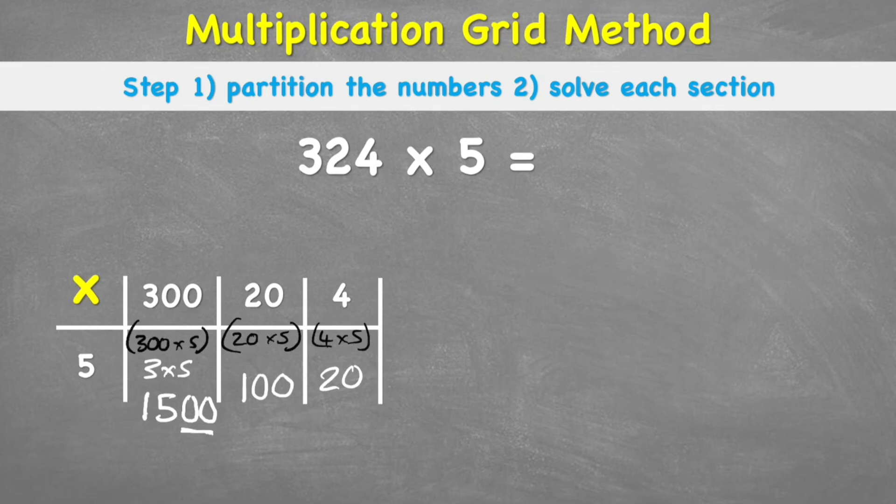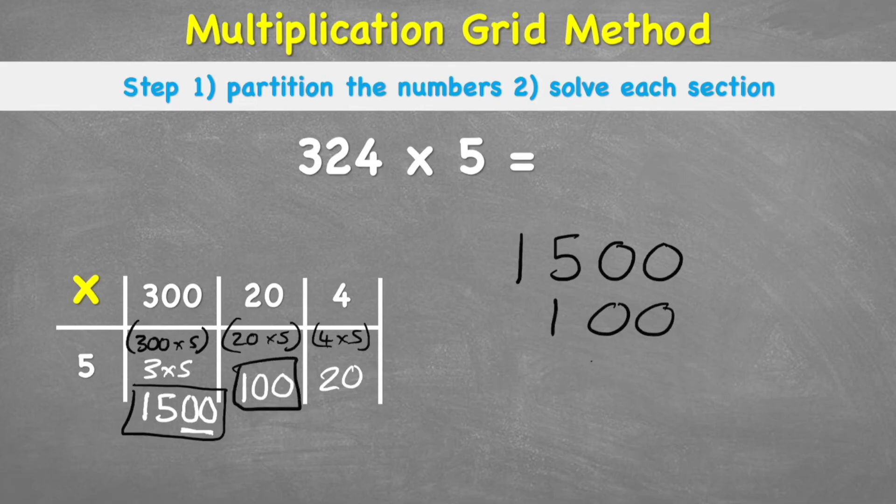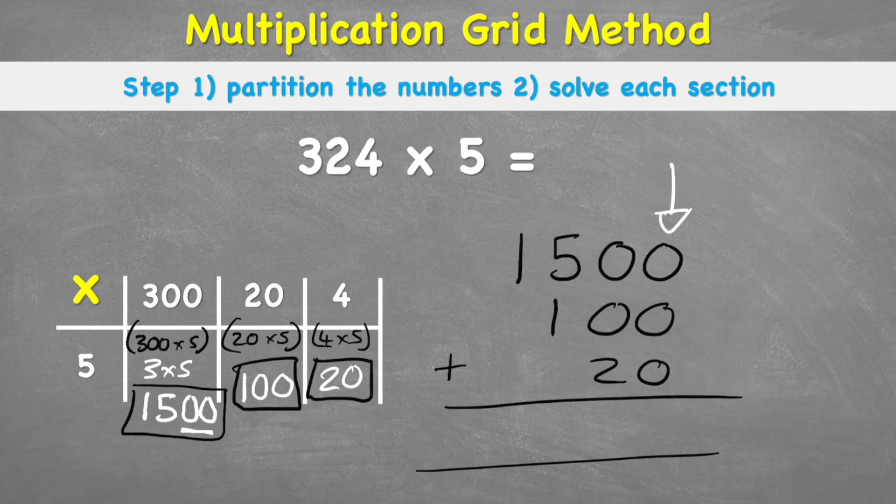But am I done? Well, no. Because what I've just done is I've partitioned. I've broken all this down into small sections. Now I need to put it all back together. And the way I can put things back together is simply using column addition. So I have 1,500, I have 100, and I have 20. They're my individual answers. So now when I add those back together, I'm going to get my grand total. Start with my smallest value, 0, 0, and 0 in the units column, 0, 0, and 2 in the tens, 5 add 1 in the hundreds column is 6, and then 1 on its own in the thousands gives me a grand total of 1,620 for my final answer.